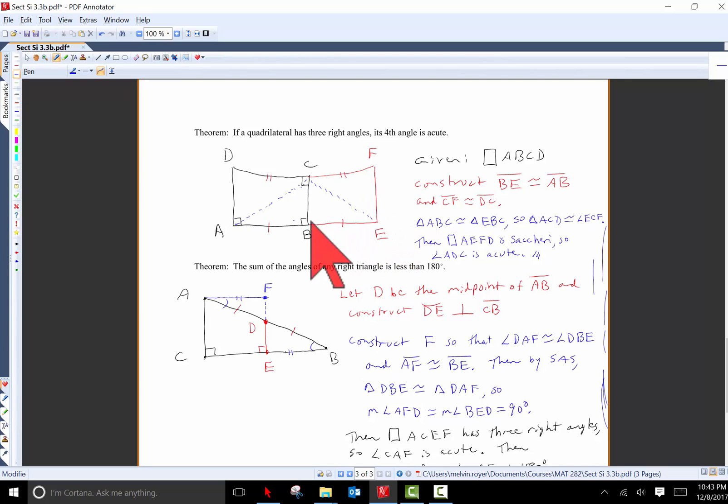And so in particular, side AD is congruent to side FE. And also there is a right angle here at FEB. That makes the quadrilateral AEFD to be a Saccheri quadrilateral. And since the summit angles of a Saccheri quadrilateral are acute, angle ADC is acute.